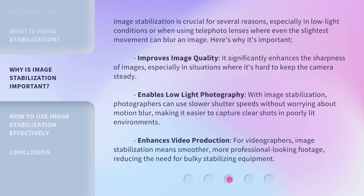It enables low light photography. With image stabilization, photographers can use slower shutter speeds without worrying about motion blur, making it easier to capture clear shots in poorly lit environments. It also enhances video production — for videographers, image stabilization means smoother, more professional-looking footage, reducing the need for bulky stabilizing equipment.